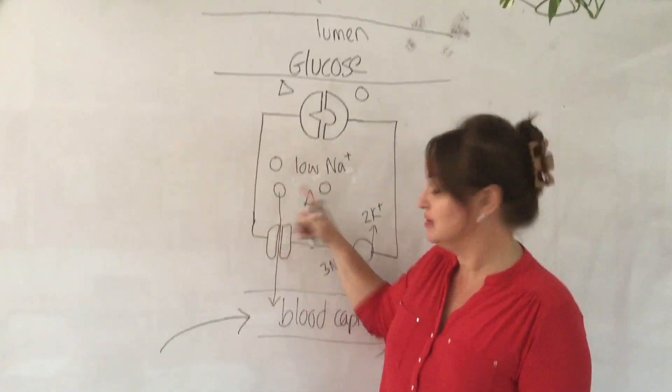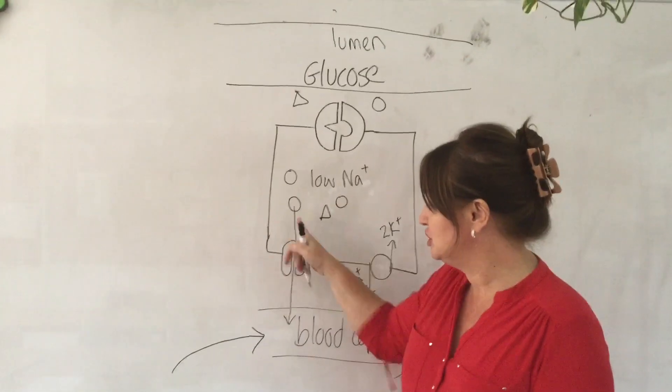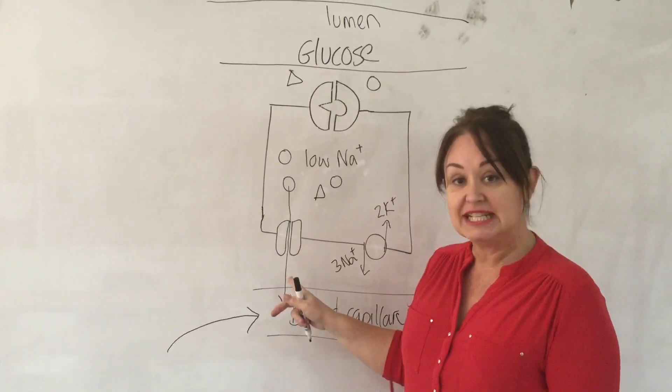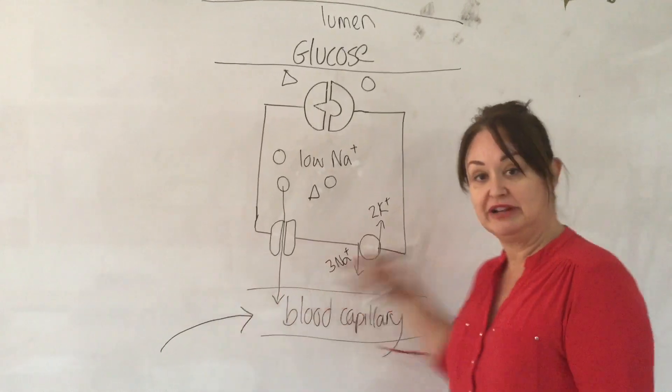So, when we've got high concentration of glucose there, it's going to move through this channel by diffusion, facilitated diffusion, into the blood capillary and away.